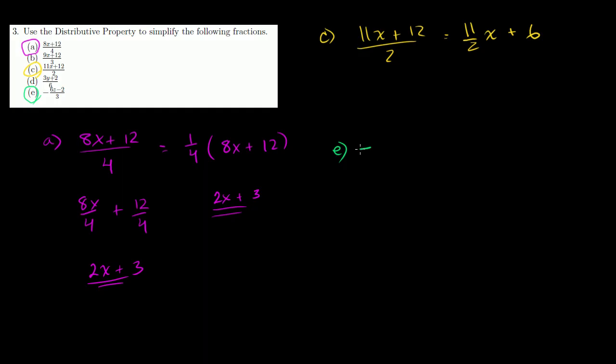e. This looks interesting. We have a negative out in front. And then we have a 6z minus 2 over 3. So one way we can view this, this is the same thing. This is equal to negative 1 third times 6z minus 2. These two things are equivalent. Right? This is just a negative 1 third. You can imagine a 1 right out here. Right? Negative 1 third times 6z minus 2.